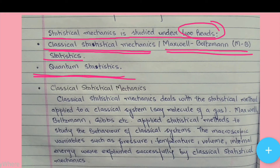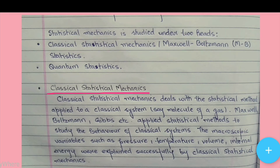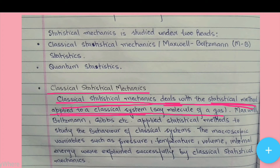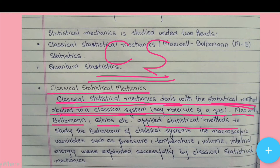Classical statistical mechanics deals with the statistical method applied to a classical system, such as molecules of a gas. Maxwell, Boltzmann, and Gibbs applied statistical methods to study the behavior of classical systems.